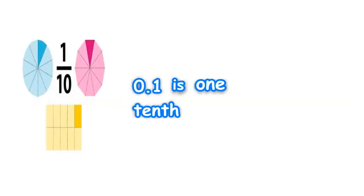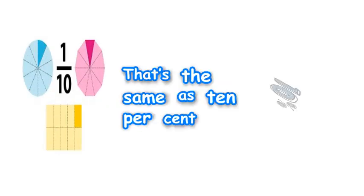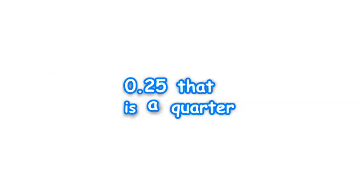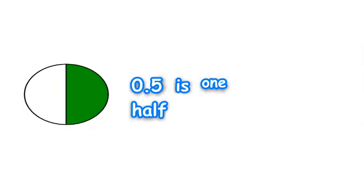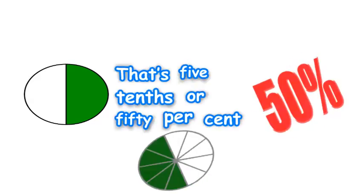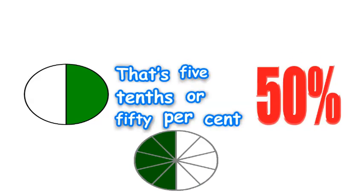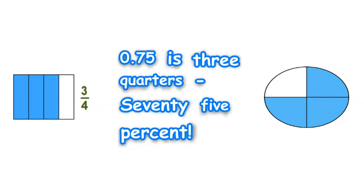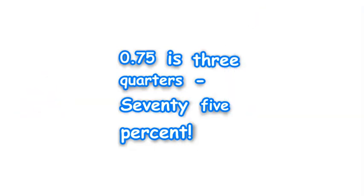0.1 — 0.1 is one-tenth, that's the same as ten percent. 0.25, that is a quarter. 0.5 is one-half, that's five-tenths or 50 percent. 0.75, that is three-quarters, 75 percent. Fractions, decimals, percentages.